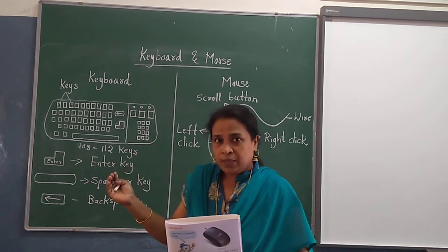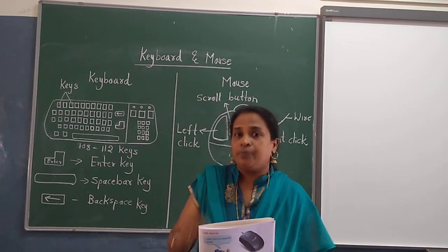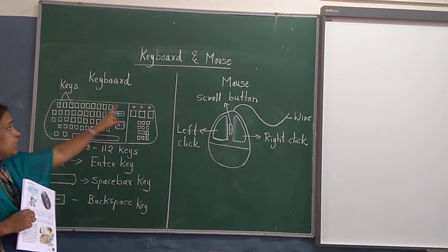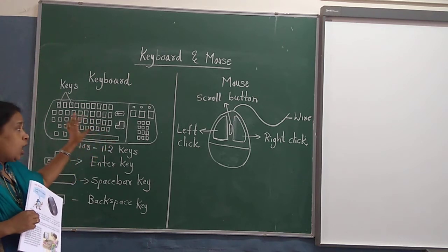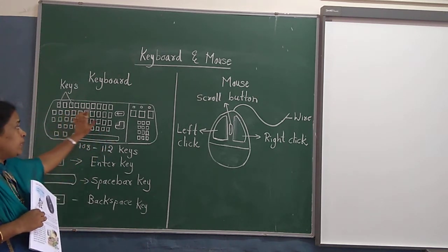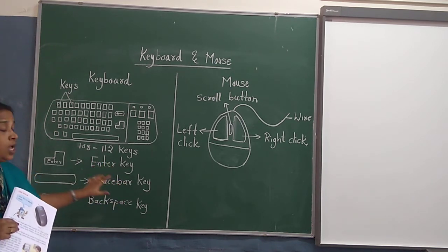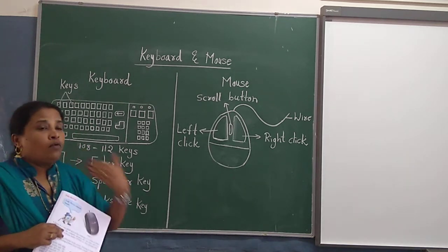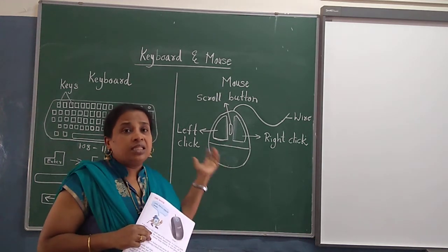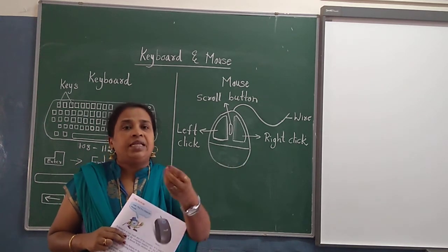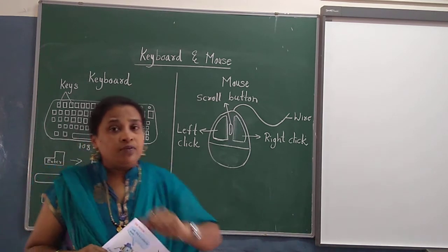Now let us see more about the keyboard. You can see, children, this is called the keyboard, and it has different varieties of keys. There are 108 to 112 keys on the keyboard. These different keys allow you to do various kinds of work. Whenever you use the computer, these are the keys which allow you to type and feed data into the computer. We are going to look at three important keys used when you start typing.